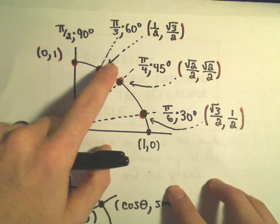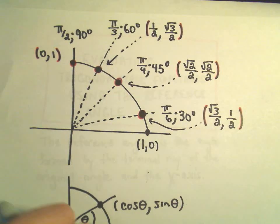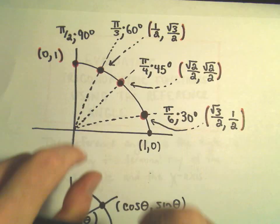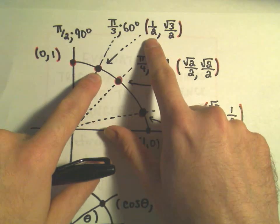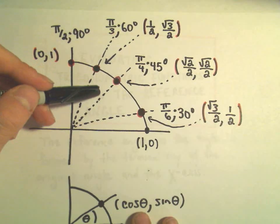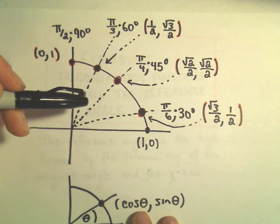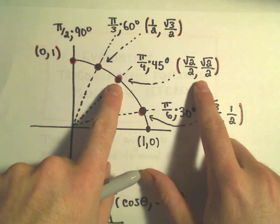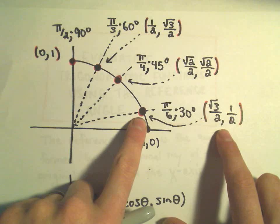Each one of these angles hits the circle in different places. The angle π/3 radians, or 60 degrees, hits the circle at coordinates (1/2, √3/2). You can justify this using a little bit of geometry. At π/4 and π/6, or 30 degrees, we've got those points listed as well.